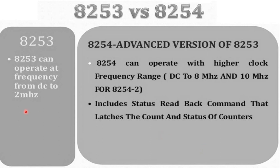The next difference is: 8253 has an operating frequency of 0 to 2.6 MHz, whereas 8254 has an operating frequency ranging between 0 to 10 MHz. The last difference is that in 8253 the read and write commands of the same counter cannot be interwoven together, whereas in 8254 it is possible to interweave the read and write commands of the same counter.